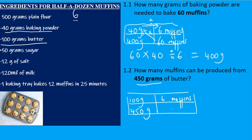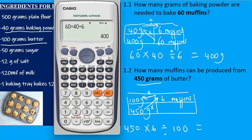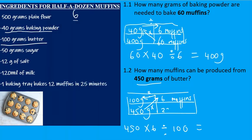Put grams under grams. Using the crisscross method, multiply 450 by 6, then divide by 100. That gives you 27 muffins — so 450 grams of butter will give you 27 muffins.